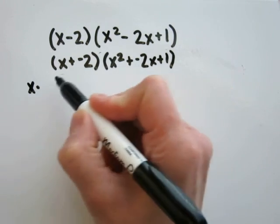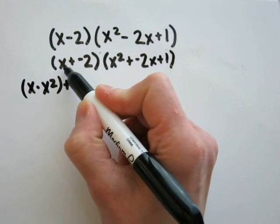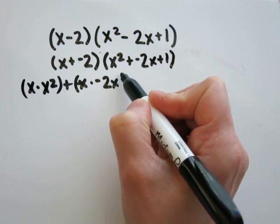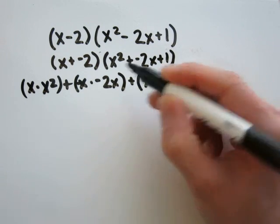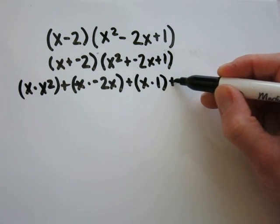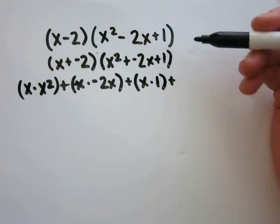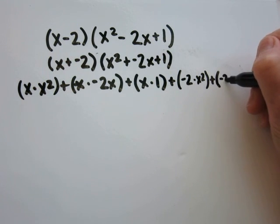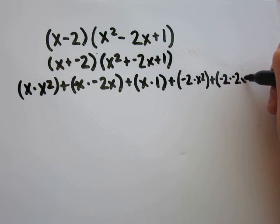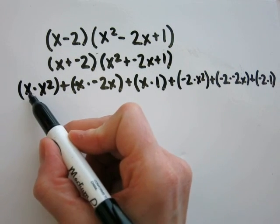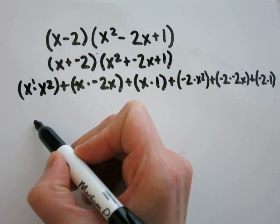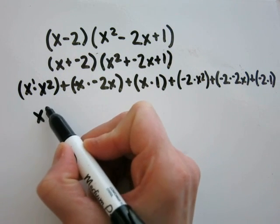So I'll take x times x squared, x times negative 2x, x times 1, negative 2 times x squared, negative 2 times negative 2x, and negative 2 times 1. Now simplify: x times x squared — I have the same base of x, so add the exponents, this is x to the 1st power, 1 plus 2 is 3 — so this becomes x cubed.